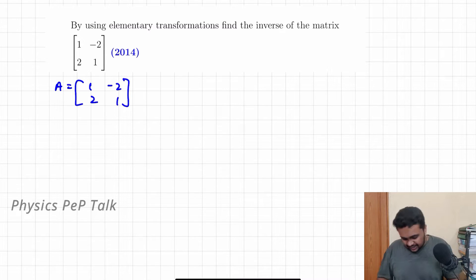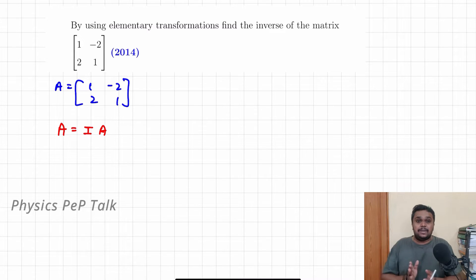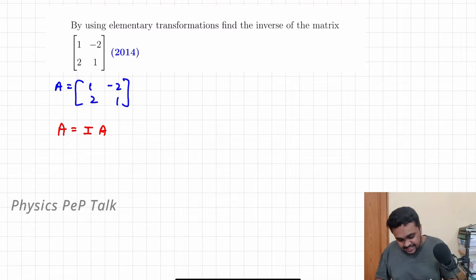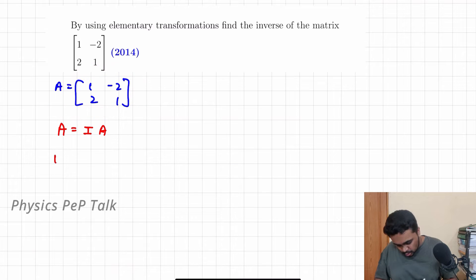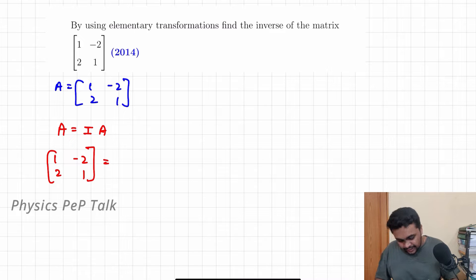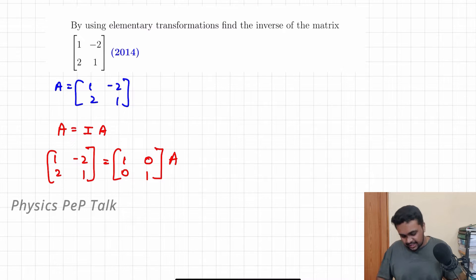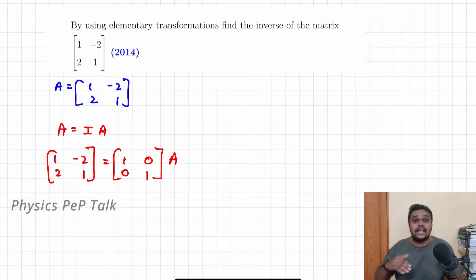What is the first step? We know that matrix A is equal to I into A. So if you multiply the matrix with the identity matrix, matrix A is on the LHS. That is [1, -2; 2, 1], which is equal to the identity matrix [1, 0; 0, 1] into A. Now I will start to convert the LHS to the identity matrix.